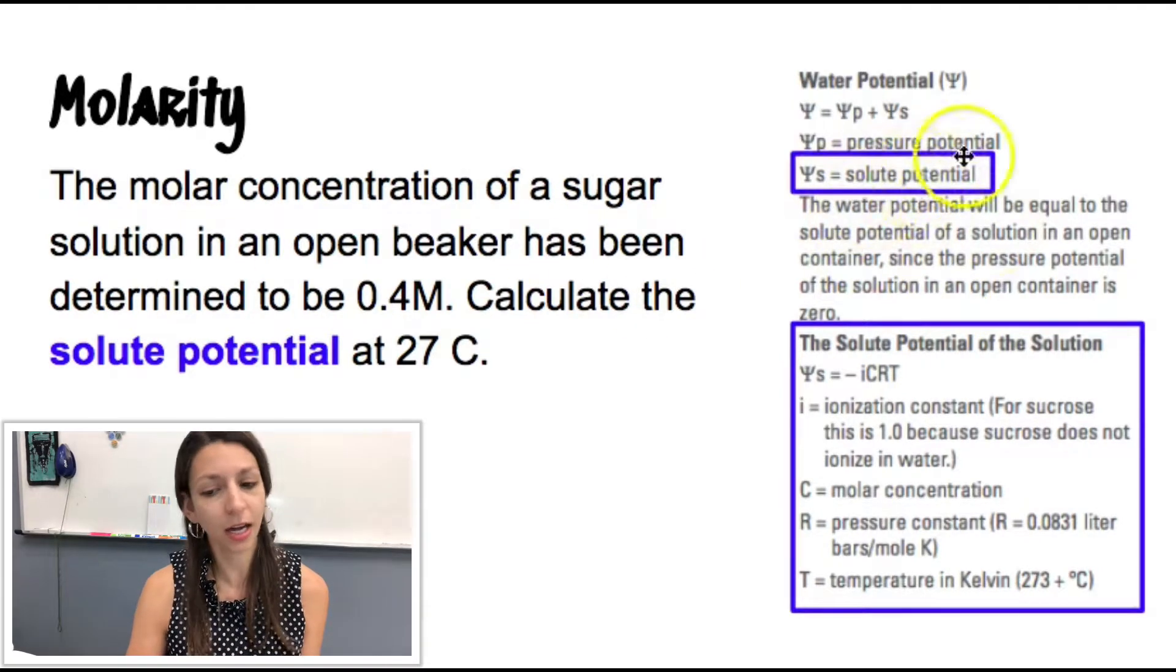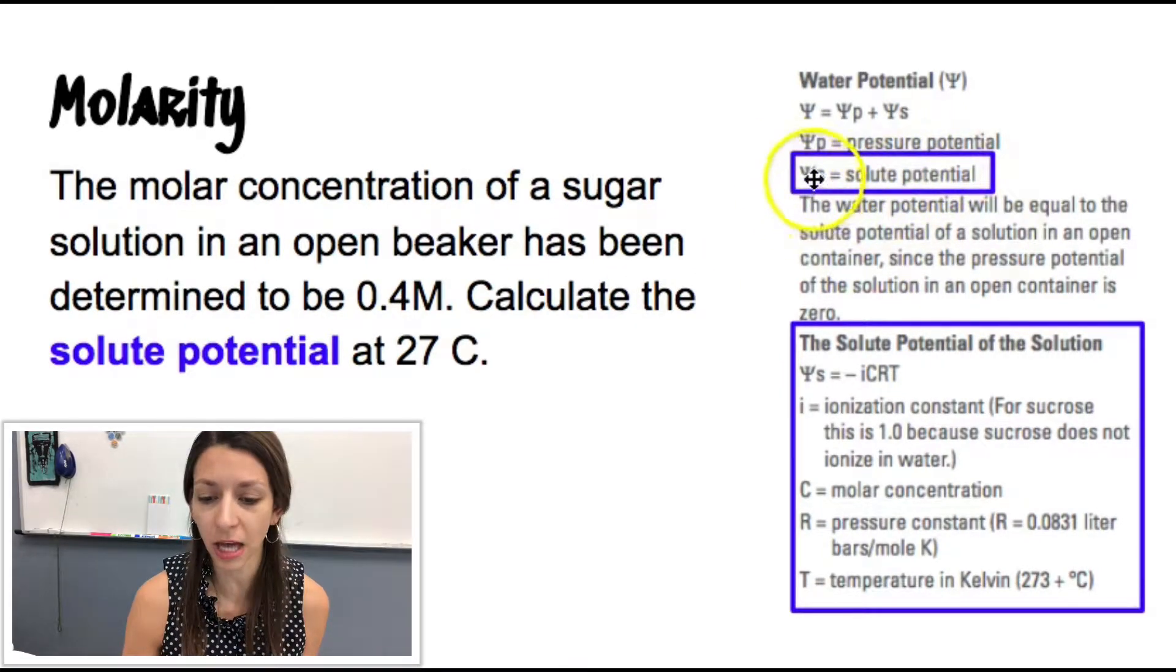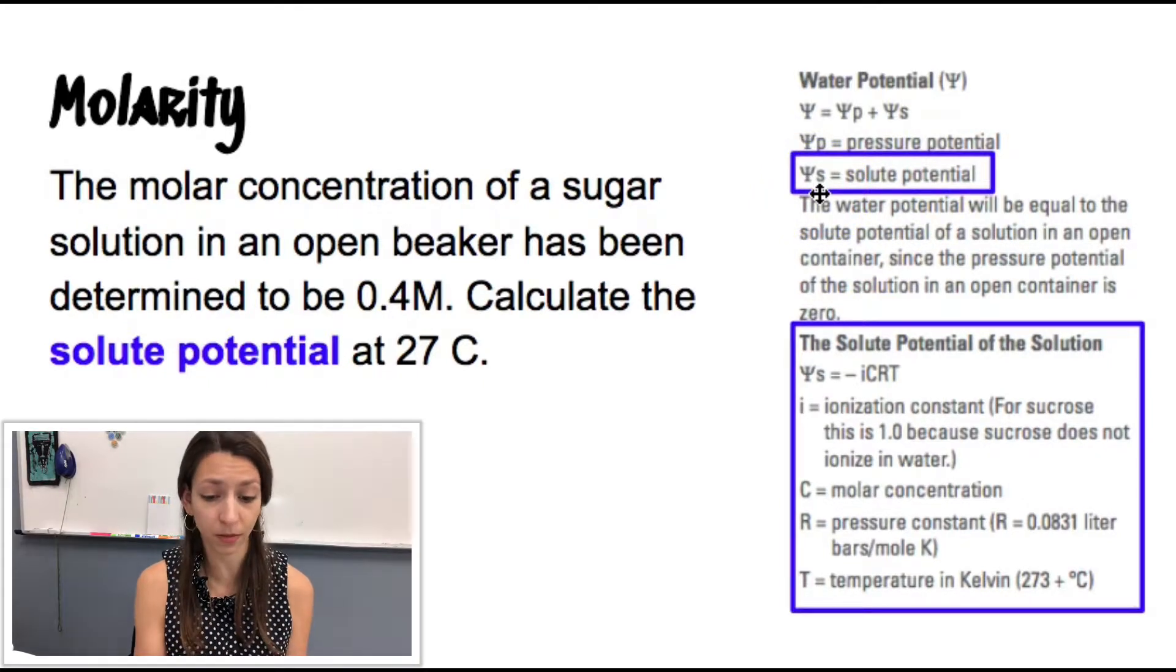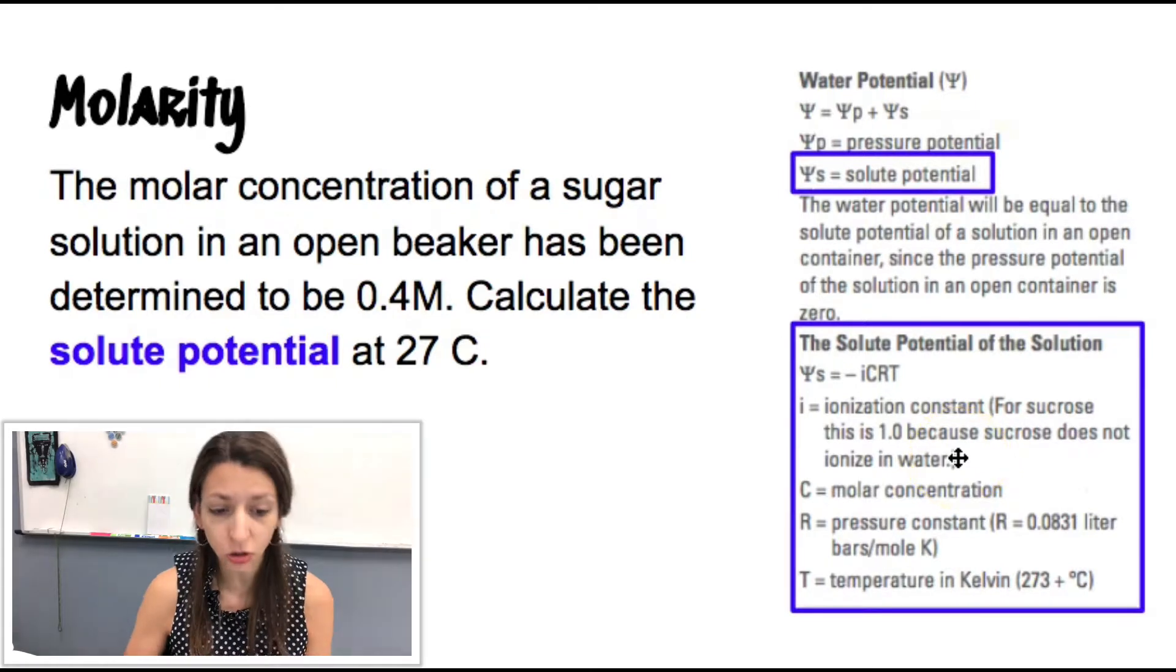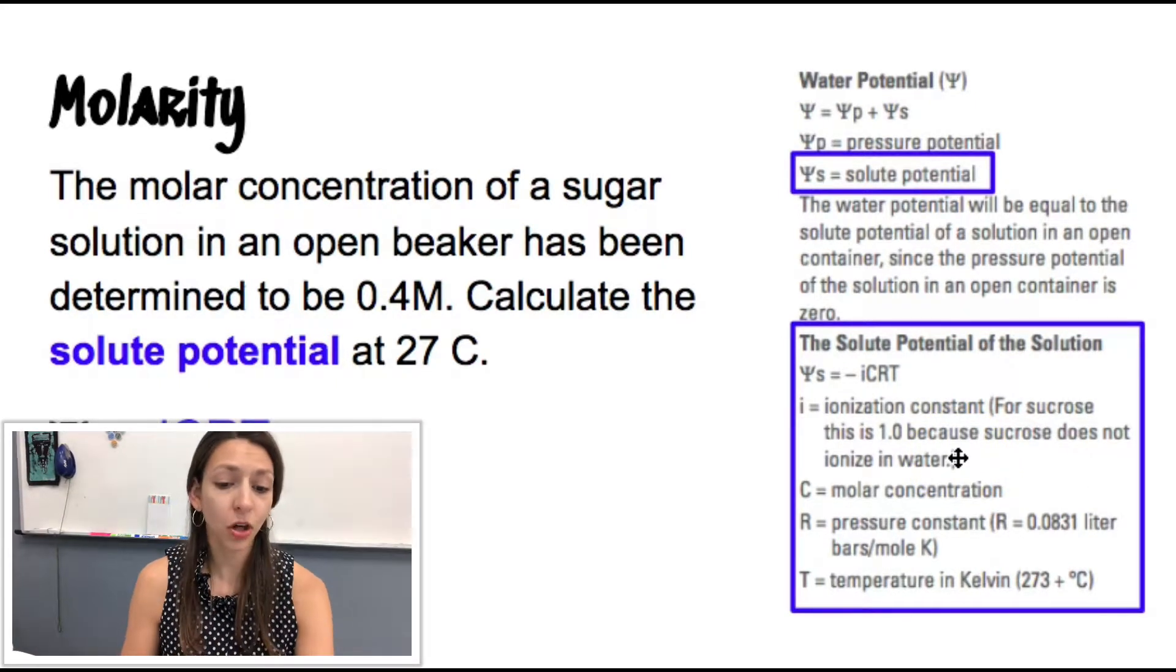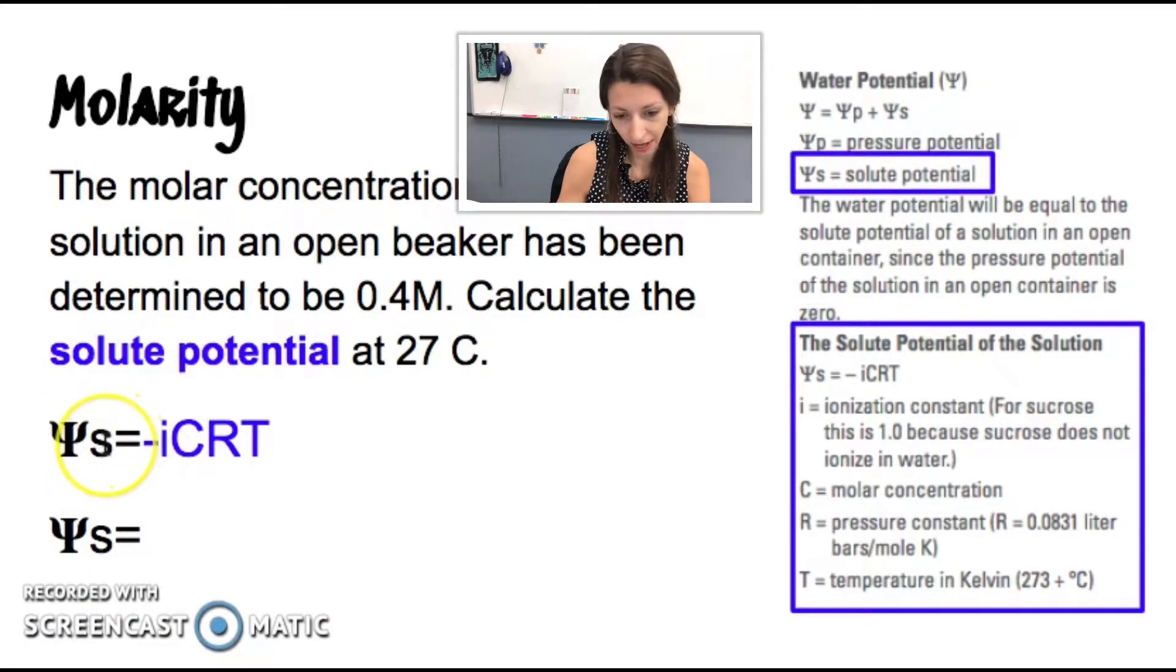So we look on our formula sheet, represented by the Greek symbol psi and this little s, that is the solute potential. So we need to find solute potential. Great. It's on our formula sheet. And there's a formula to go with solute potential with lots of given variables. So we can pretty much just plug this in. So our formula for solute potential, psi sub s or psi s, negative ICRT.